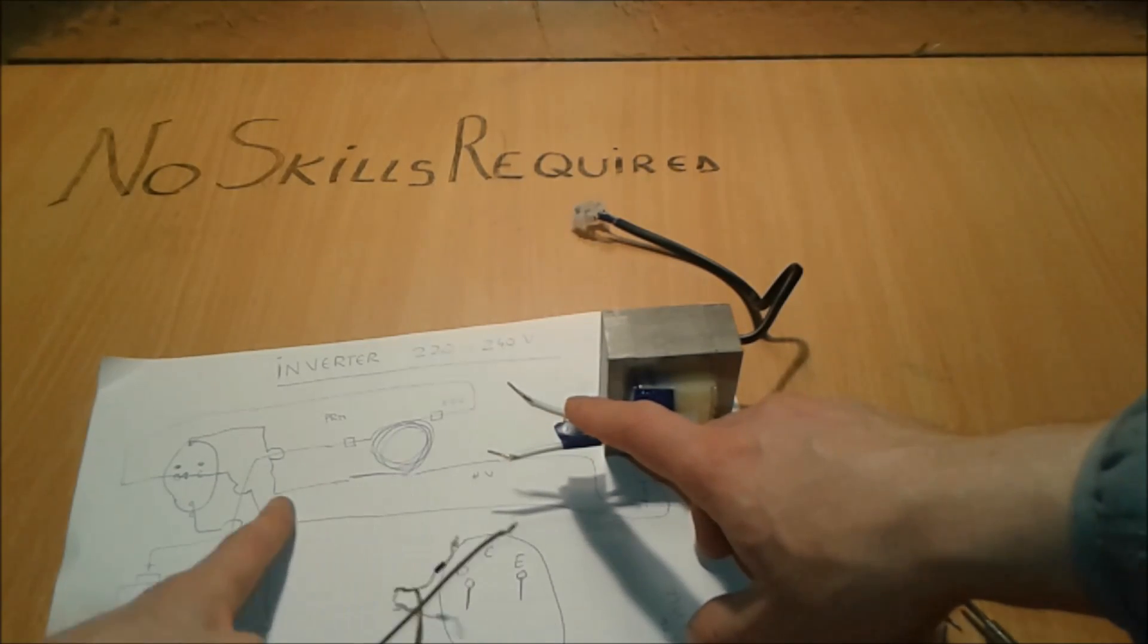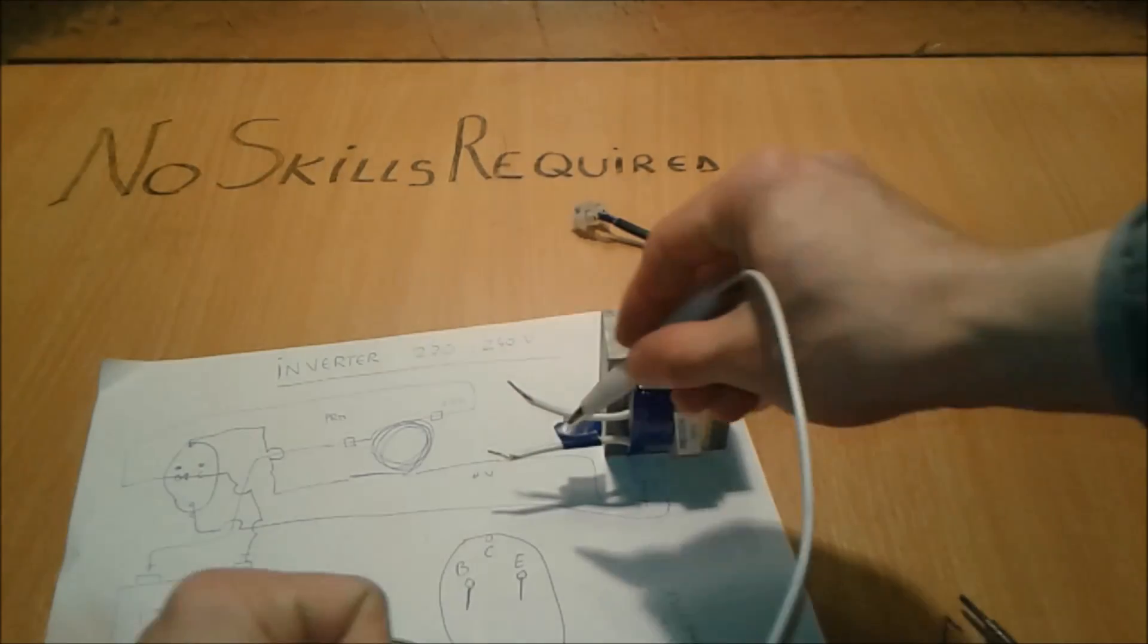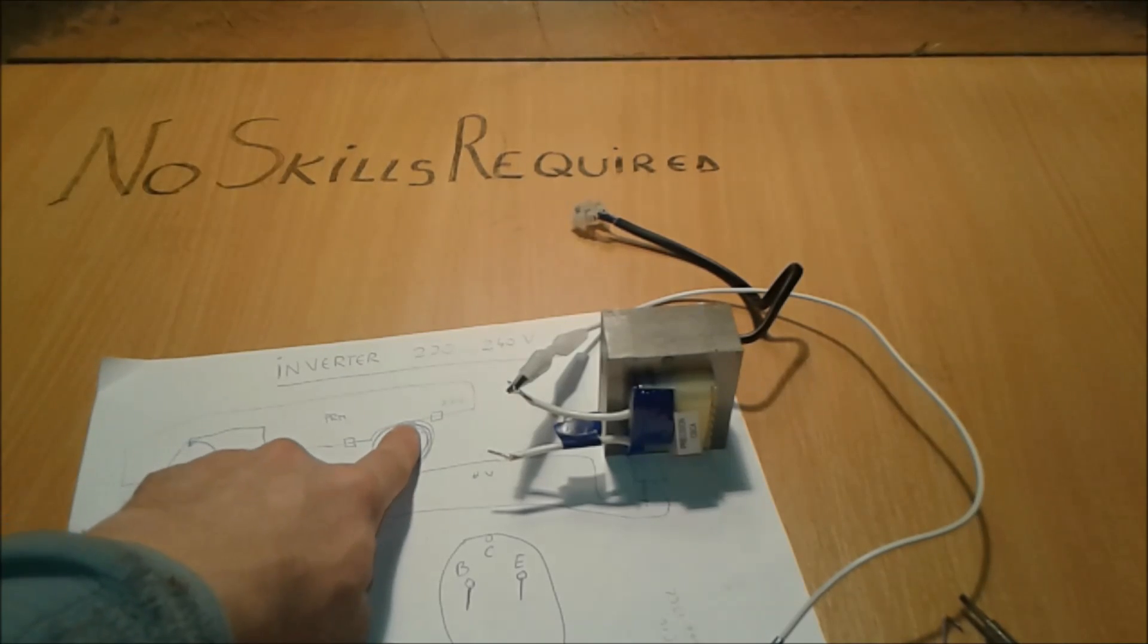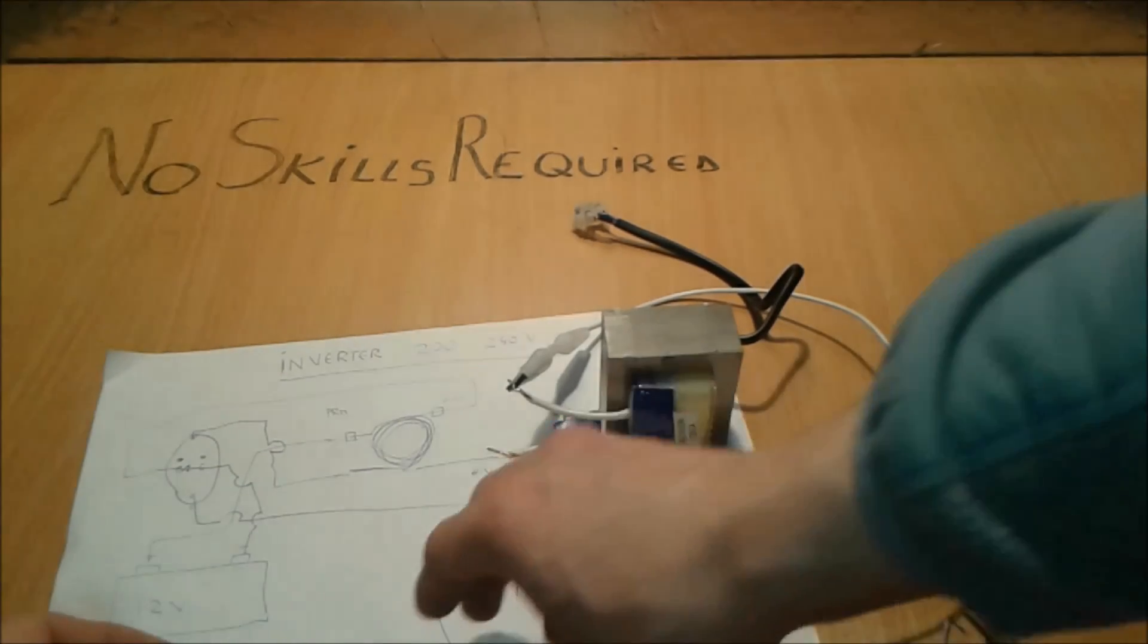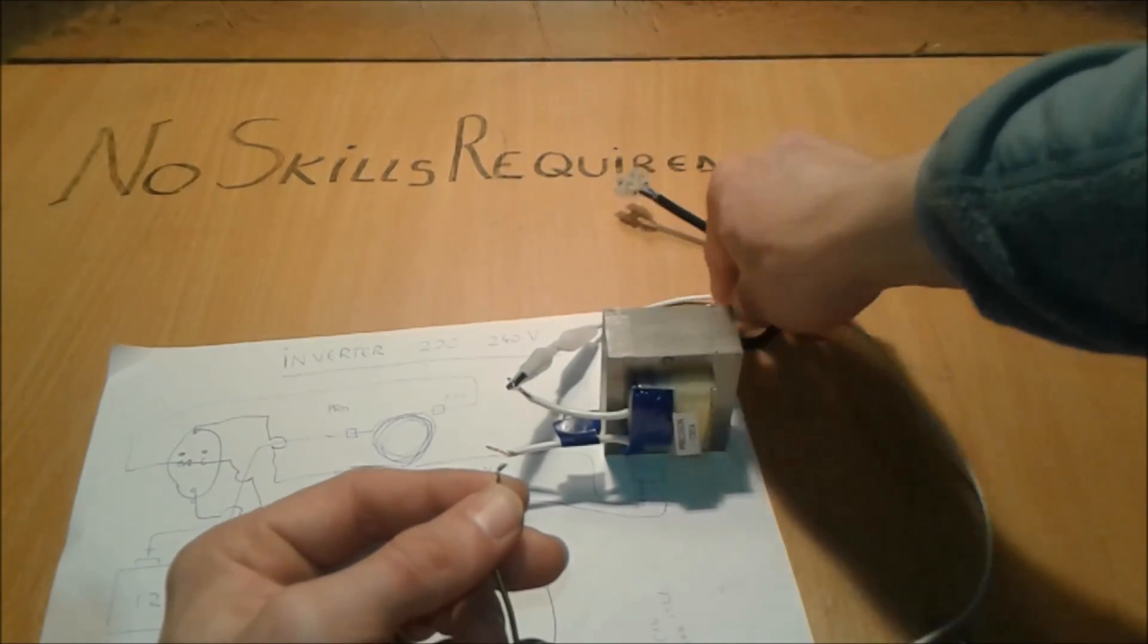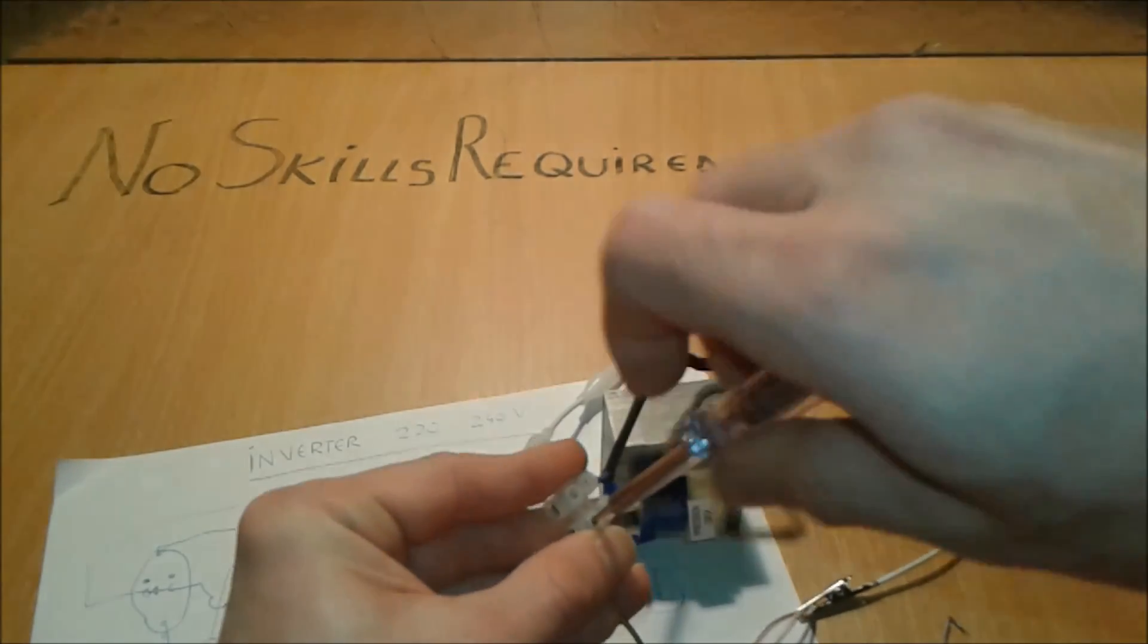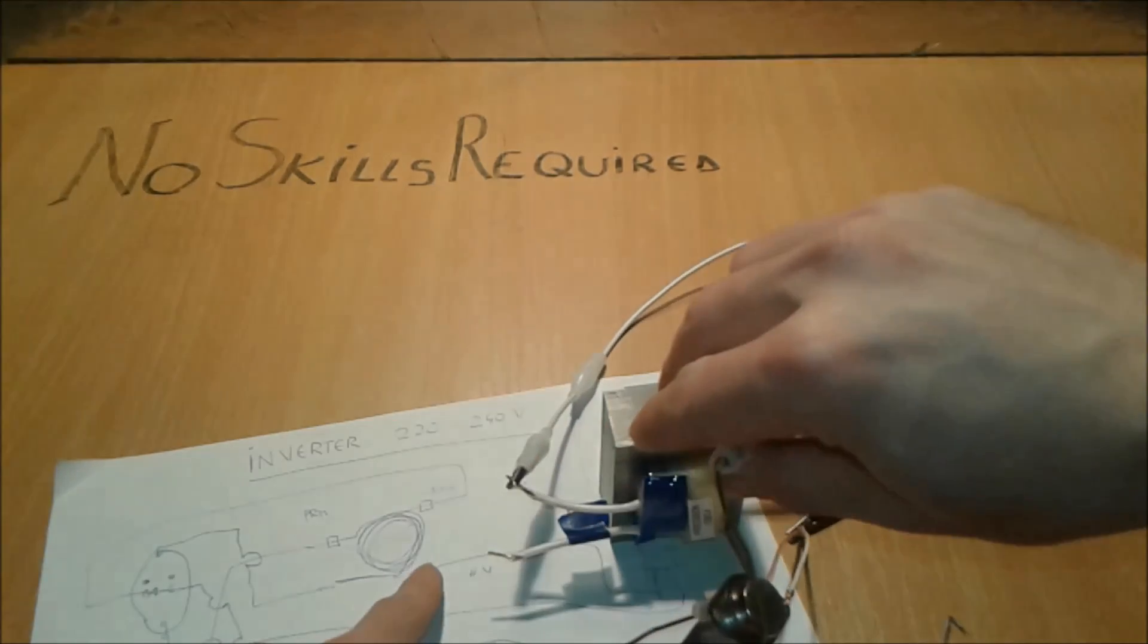Secondary of the primary is going to the collector. We're going to take an alligator clip, secondary to collector, done. First one of the secondary is going to go to base. This is the base, so the primary, this one is going to base, screw it in very fast, done.